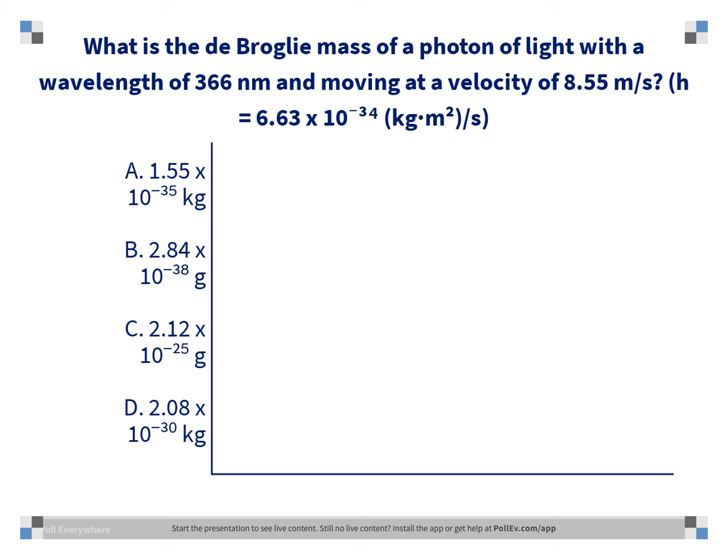First, we rearrange our lambda equals h over mu equation to solve for mass. To get mass by itself on one side of the equals sign, we do a little math trick and have the lambda and the m switch places. You could also do the rearranging old school and multiply both sides by m and divide both sides by lambda. We check our units. Our wavelength is given to us in nanometers, but we need it in meters, so we multiply by 10 to the minus 9 and come out with 3.66 times 10 to the minus 7 meters.